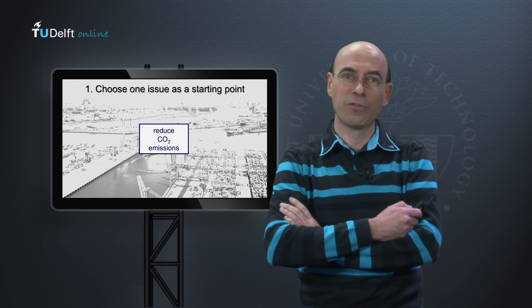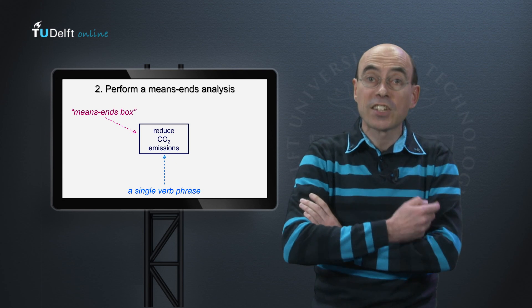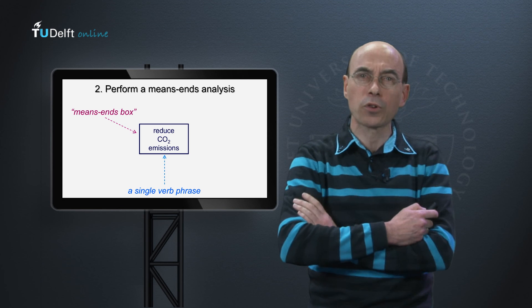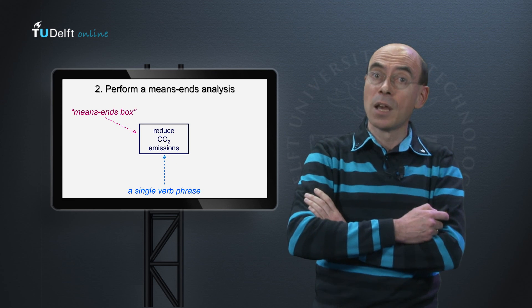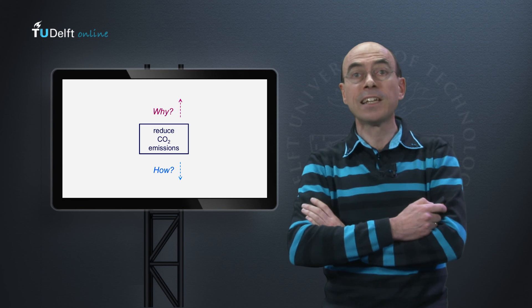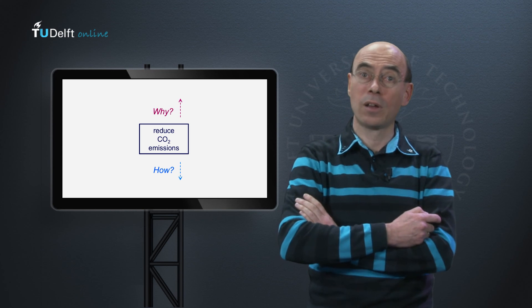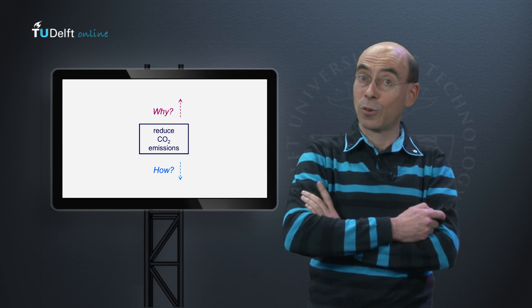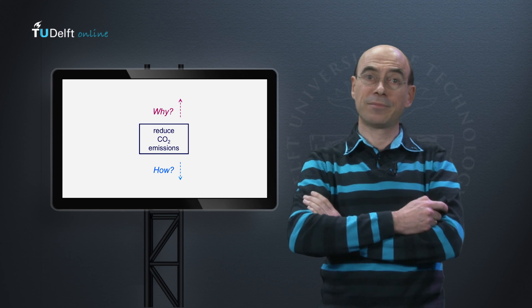This provides an excellent starting point for further analysis. The key concept in means-ends analysis is the means-ends, which we draw as a rectangle labeled with a single verb phrase. Using verb phrases is important because you want to make clear that a means-ends box not only represents something your client wants to achieve — an end — but also something your client can do — a means. You perform the means-ends analysis by repeatedly asking only these two questions: Why? Why do you want to achieve this? And how? How can you achieve this? The why questions help you identify your client's higher aims, also called end objectives. The how questions help you identify more and more concrete means for your client.